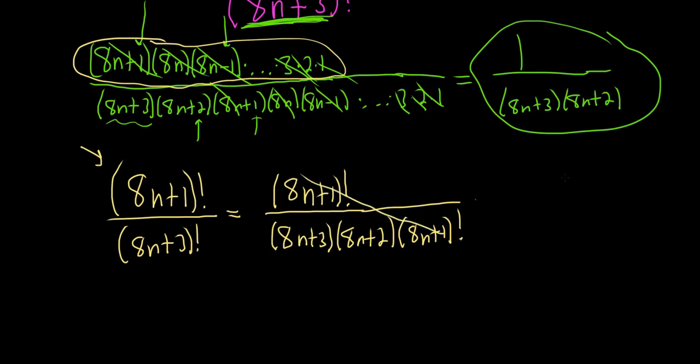Much cleaner. This is how pros do it. This is 1 over 8n plus 3, 8n plus 2. Went through this kind of quickly, but hopefully it makes sense. And you see two different solutions.